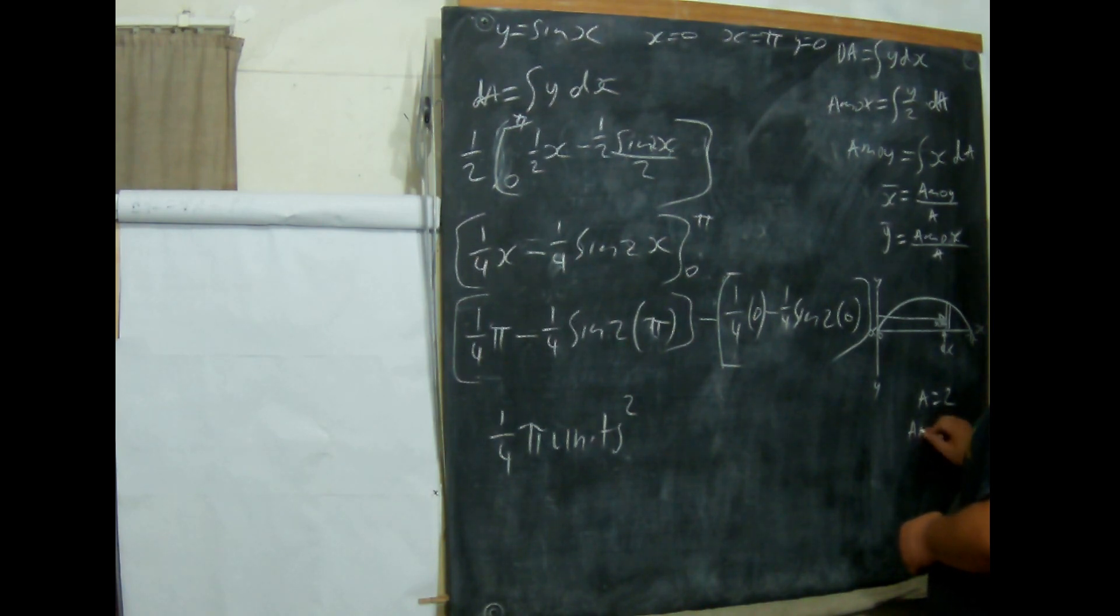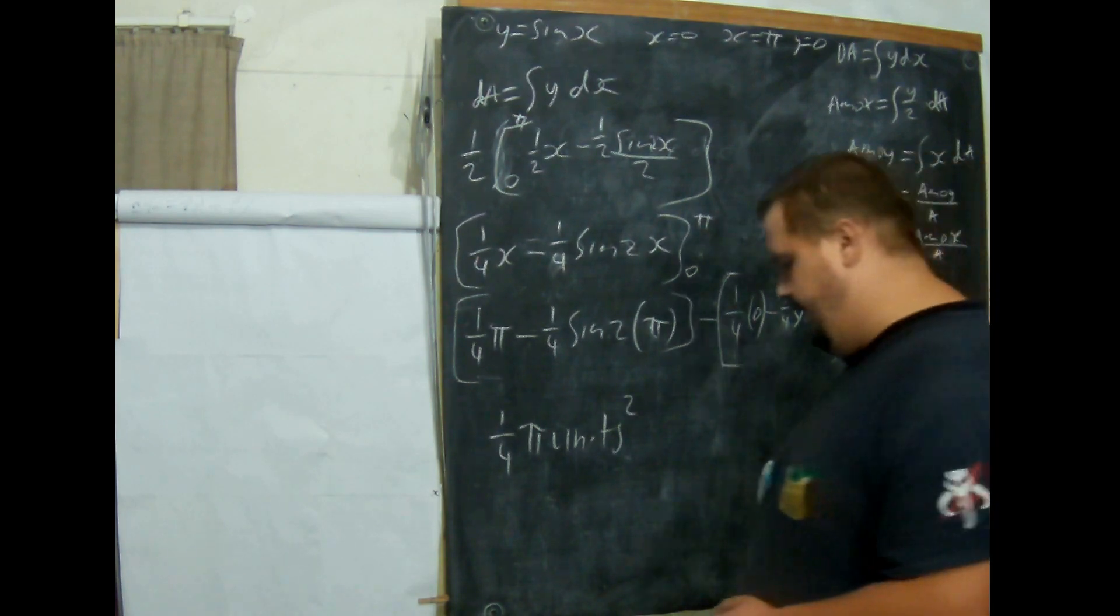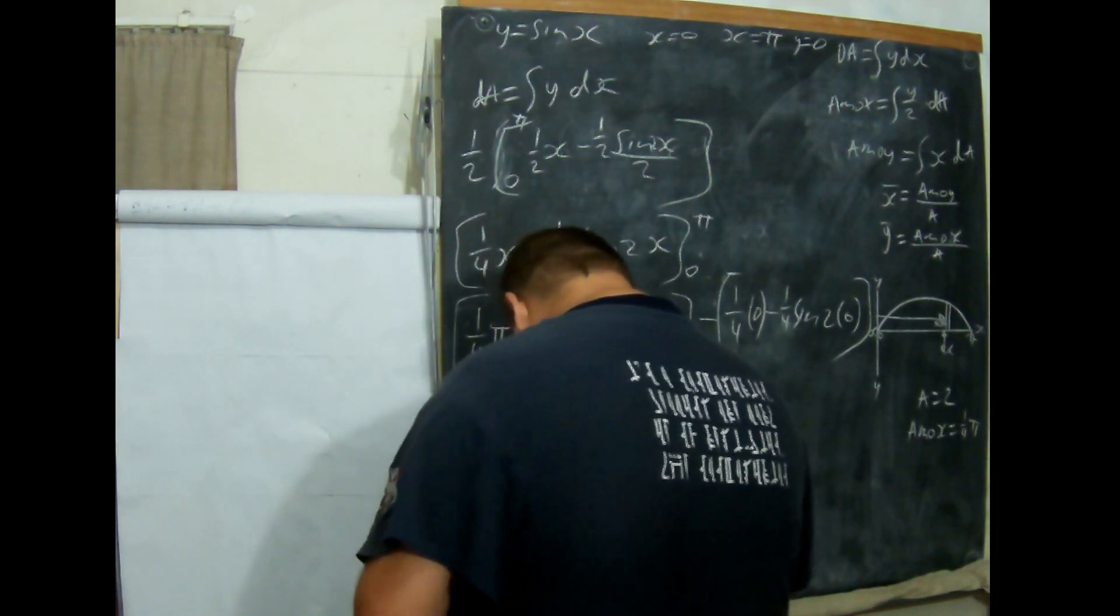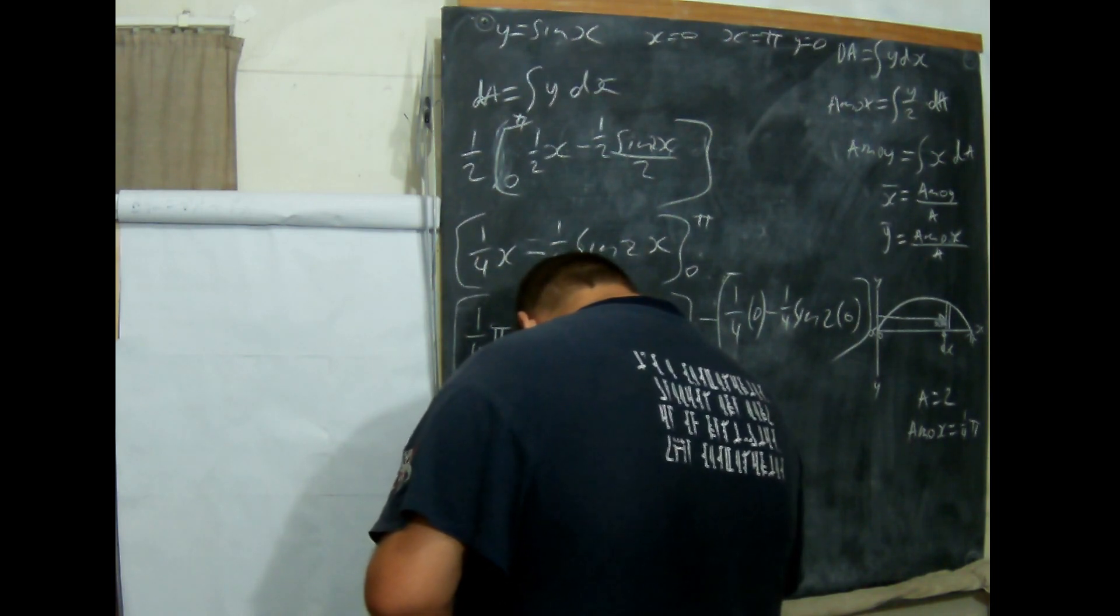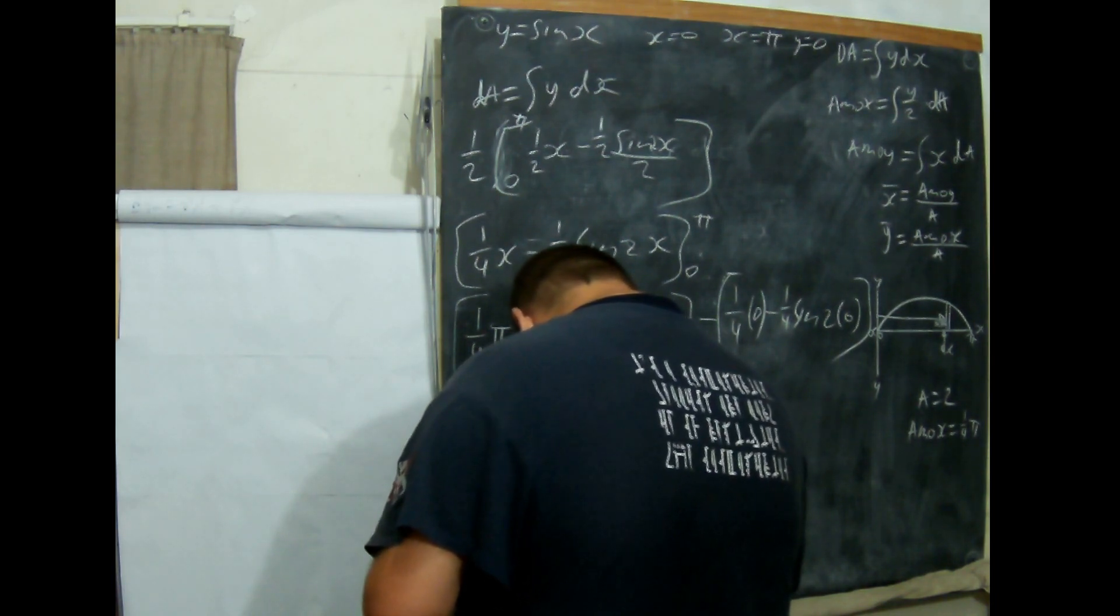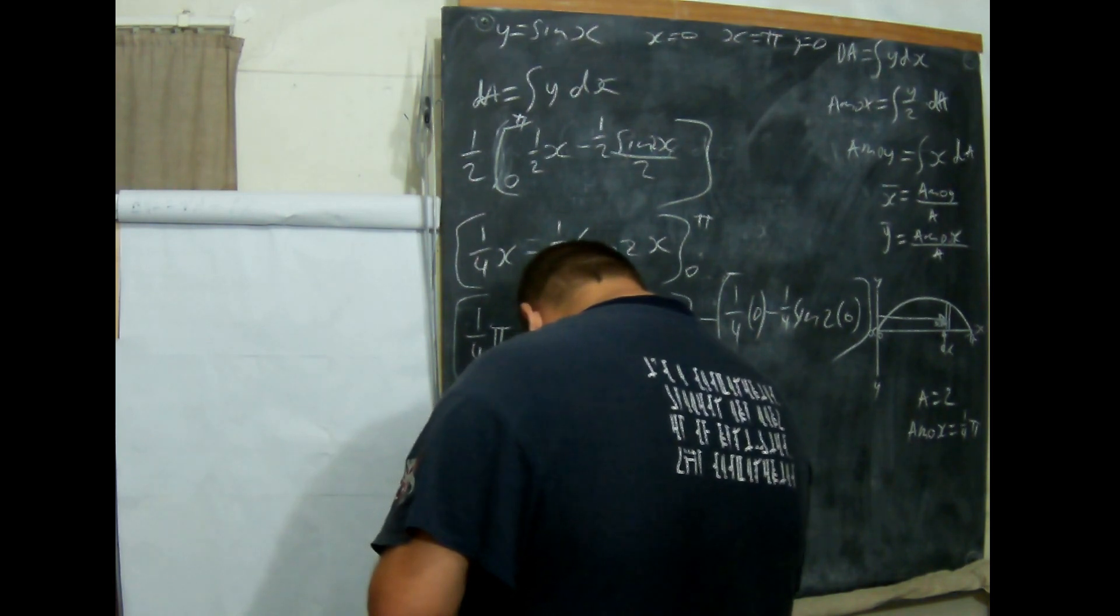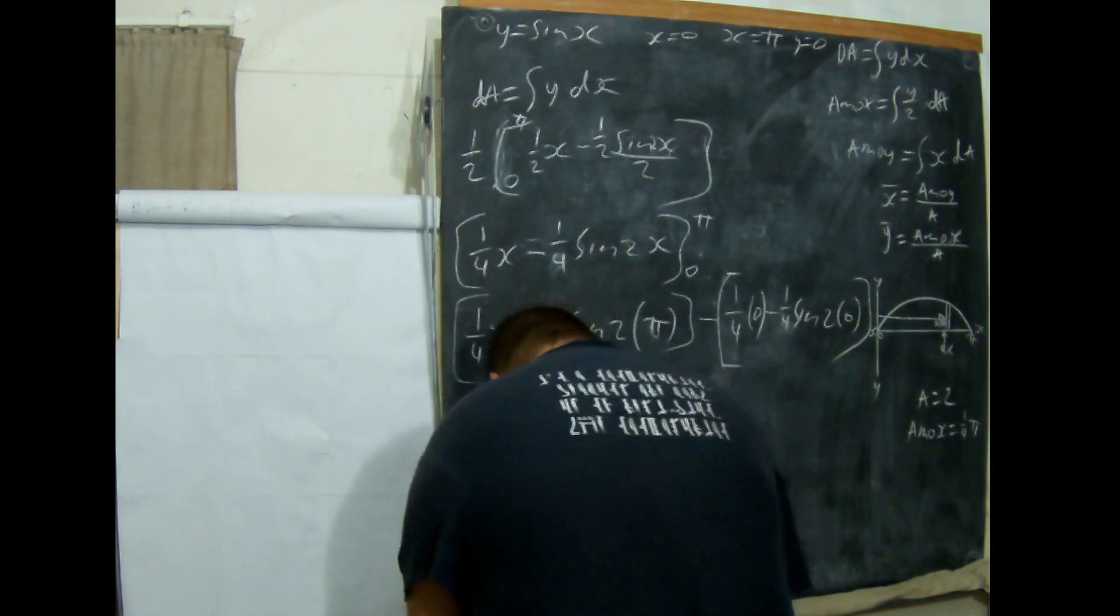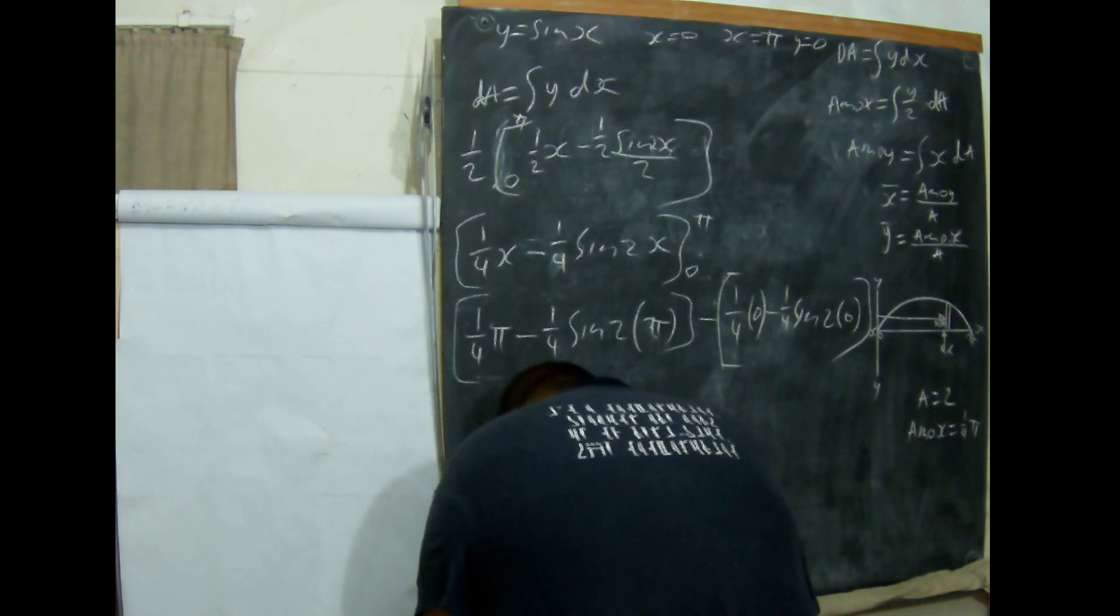A quarter pi units squared. So A M O X equals a quarter pi. That will be important for just now.